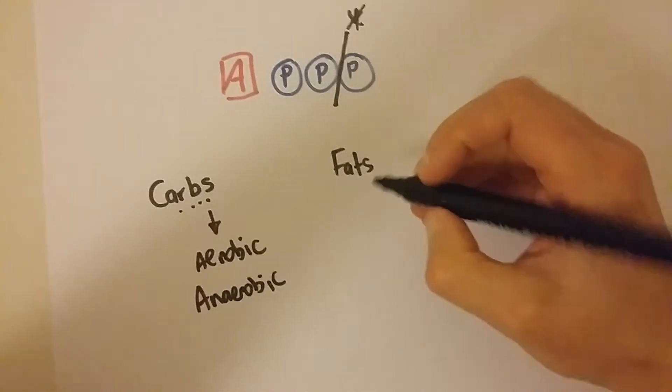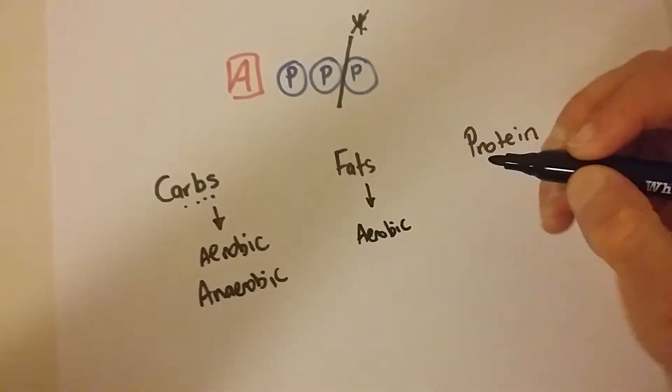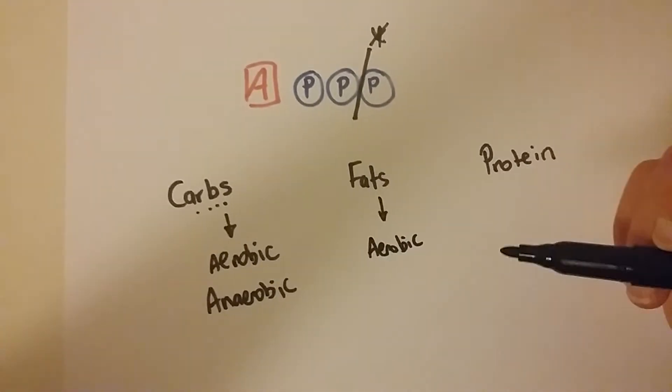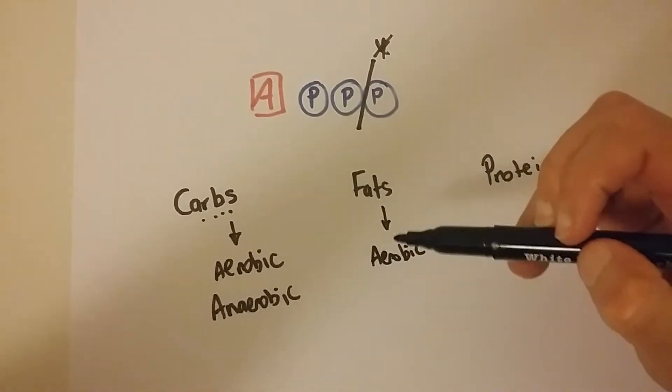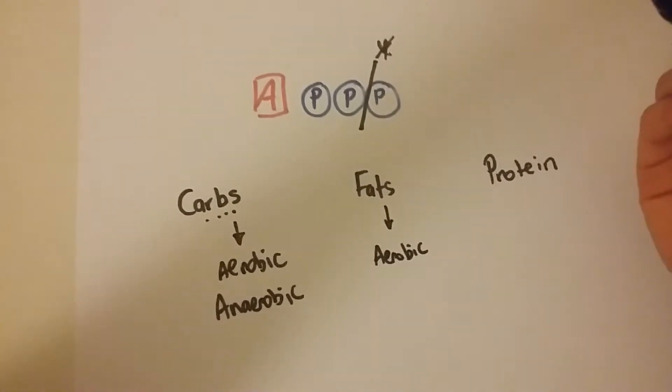Okay now fats. We know fats only come from aerobic and that all happens in that mitochondria. So if it's aerobic, these two, then that all happens in the wonderful little machine called the mitochondria. They create it into ATP. Fab.